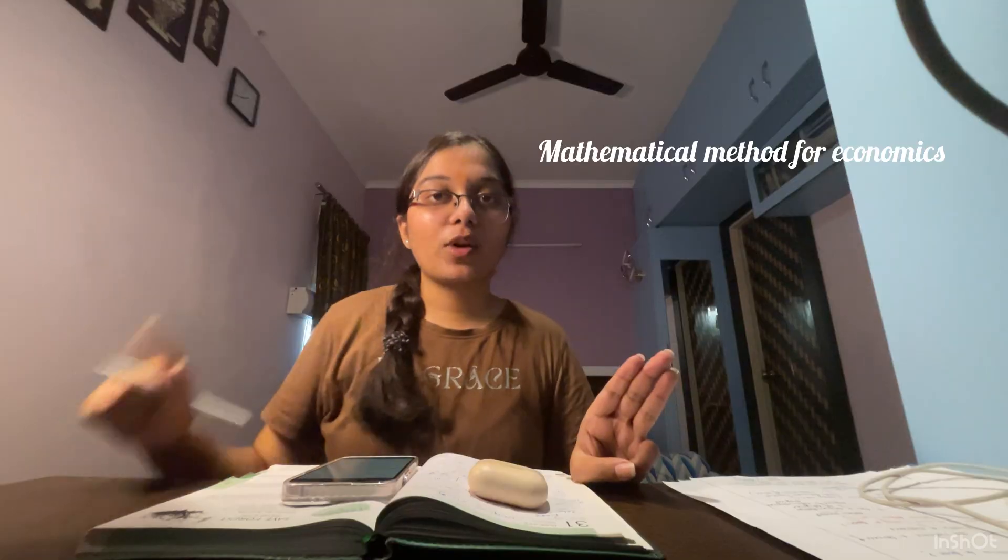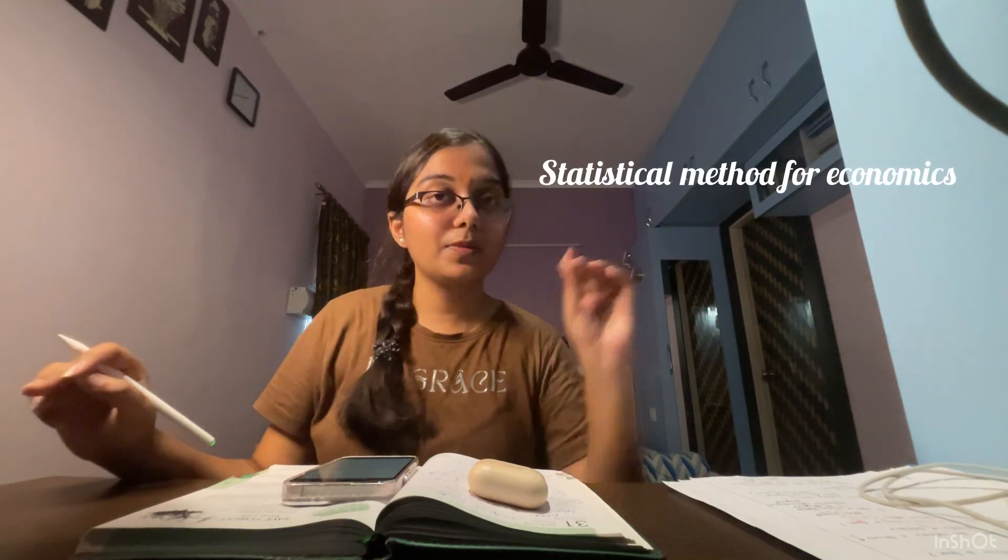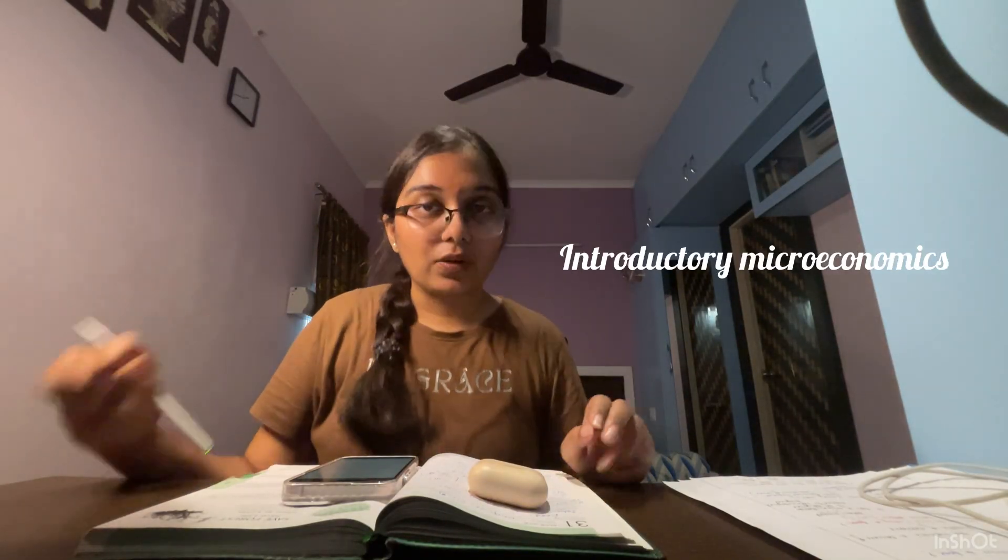Now one more basic point before moving to Economics Honours specifically. Every course will have three core papers. For Economics Honours, these are: first, Mathematical Method for Economics Part 1; second, Statistical Method for Economics Part 1; and third, Introductory Microeconomics. Each core paper is 90 marks external and 70 marks internal, following the same pattern I described.